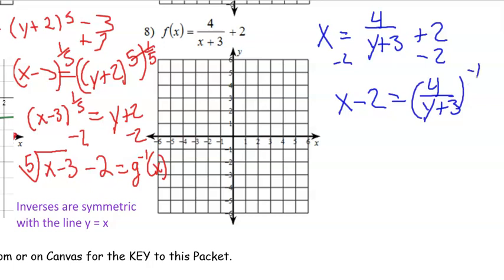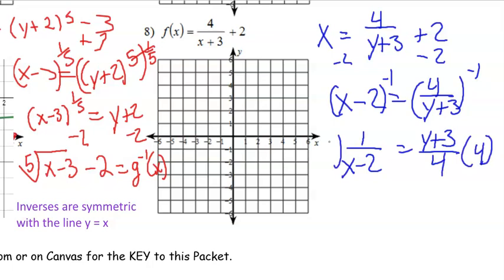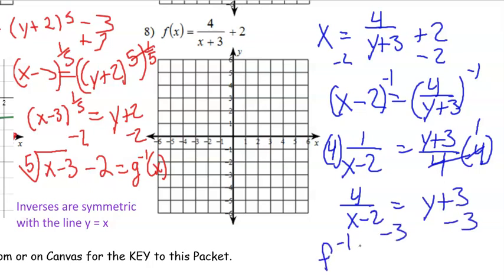Let's get the reciprocal of each side. So exponentiate by negative 1. So then you have 1 over x minus 2 equals y plus 3 over 4. To get rid of the 4, we're going to multiply each side by 4. That's 1. So we have 4 over x minus 2 equals y plus 3. Subtract 3. And so your inverse would be 4 over x minus 2 minus 3.